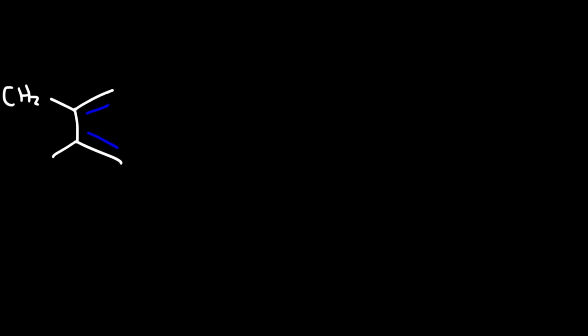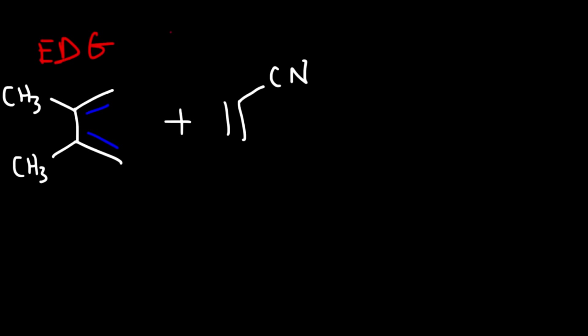Now let's go over some other examples. If we have a diene with two methyl groups, a methyl group is an electron-donating group — it's a weak electron-donating group but it makes the diene more nucleophilic. We're going to add an electron-withdrawing group to the dienophile, such as a cyano group (CN). The electron-withdrawing group makes the dienophile more electrophilic and more reactive in the Diels-Alder reaction. So you need an electron-donating group to enhance the diene and an electron-withdrawing group to enhance the dienophile.